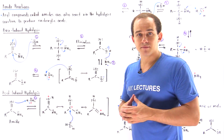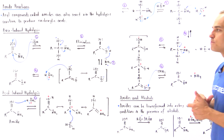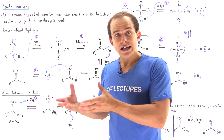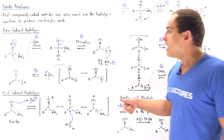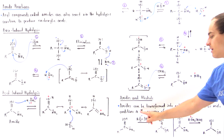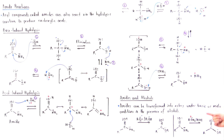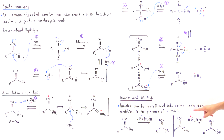The reaction mechanisms of both hydrolysis pathways are exactly analogous to when we used esters instead of amides. We can also react alcohols with amides under either basic or acidic conditions to transform amides into esters. Under basic conditions we use an alkoxide instead of hydroxide; under acidic conditions we use the protonated alcohol, and in both cases we transform the amide into our ester.